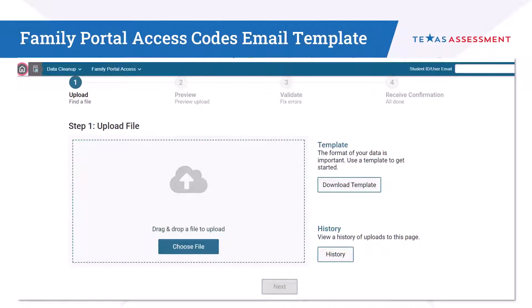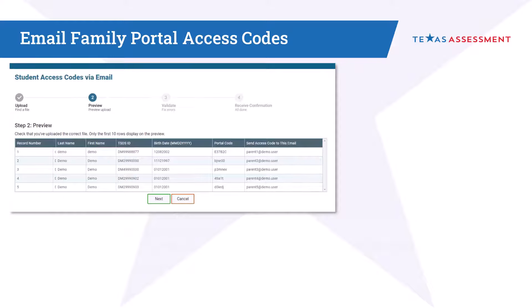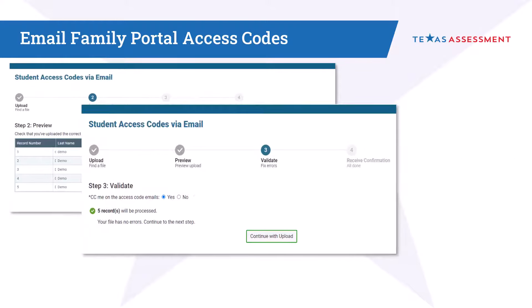TIDE allows district personnel to email families and provide them with a link to obtain their students' unique access code for the Family Portal. Once the family email addresses have been added to the populated Excel file, district personnel should upload the Excel file on the Student Access Codes via Email page. Emails are automatically sent to families once the upload, preview, and validate steps have been completed.